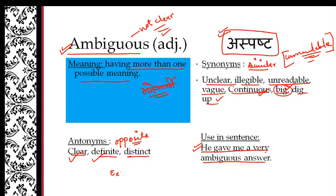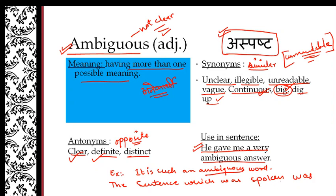It is such an ambiguous word. So this word, it is very aspershed and we can write it. The sentence which was spoken was quite ambiguous. That means what was the sentence? It was very aspershed. So we can use it in the sentence.